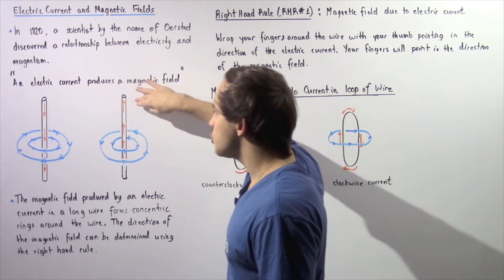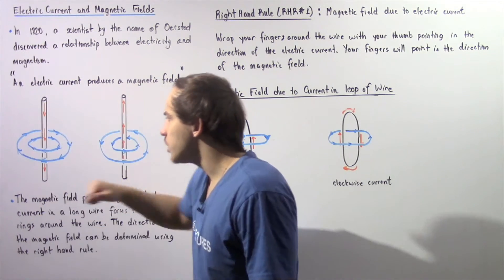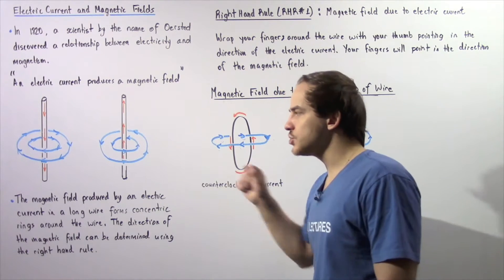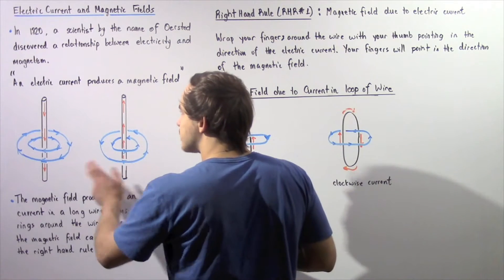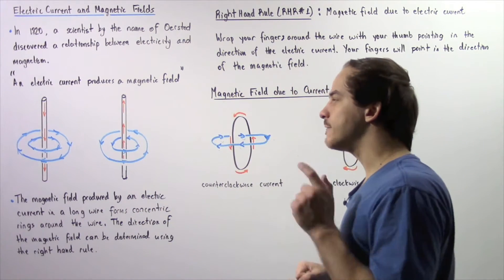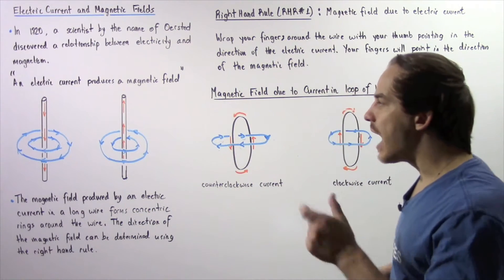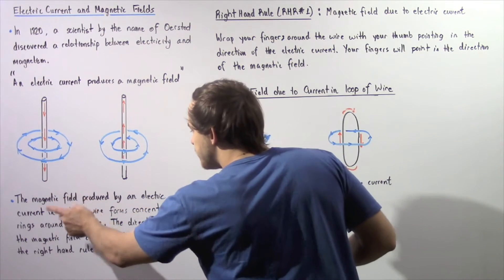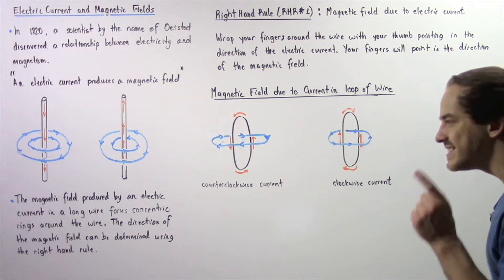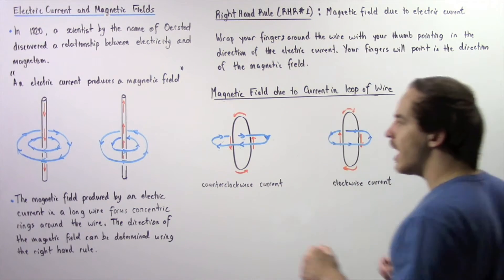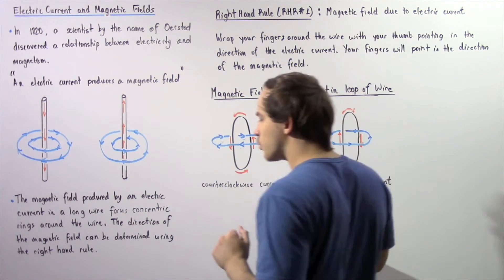Let's suppose we have the following two wires. The electric current in wire 1 runs downward along the wire and the electric current in wire 2 runs upward along that wire. Both of these electric currents will produce a magnetic field, but in both cases the magnetic fields will point in the opposite direction. The magnetic field produced by an electric current in a long wire forms concentric rings around the wire, as shown in the following two diagrams. So in both cases, we have concentric rings.